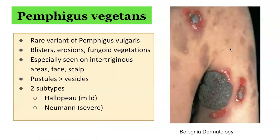One rare variant of Pemphigus vulgaris is Pemphigus vegetans. This is characterized by flaccid blisters that become erosions and then form fungating vegetations or papillomatous proliferations, particularly in intertriginous areas and on the scalp or face. Pustules rather than vesicles characterize early lesions, which soon progress to form vegetative plaques. The tongue may also show cerebri-form-like changes. There are two recognized subtypes: the more severe form of Neumann and the milder form of Hallopeau.